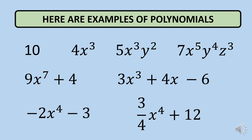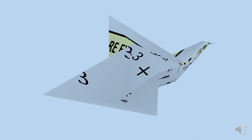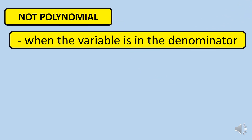So those are all examples of polynomials. Now, when do we say that an expression is not a polynomial? Here are the reasons. First, when the variable is in the denominator. A fraction has two parts: the numerator and the denominator. When an expression is in fraction form and the variable is located in the denominator, we classify the expression as a non-polynomial.